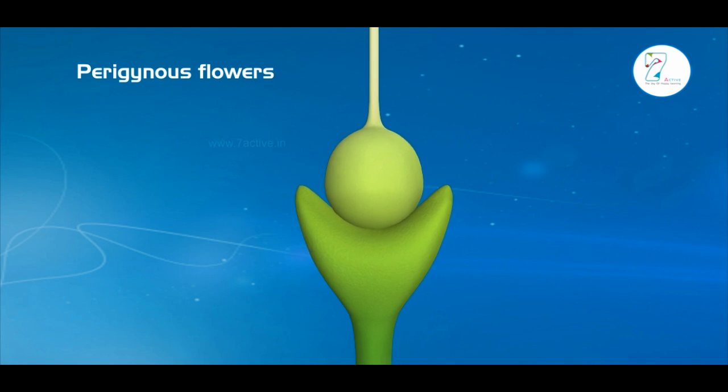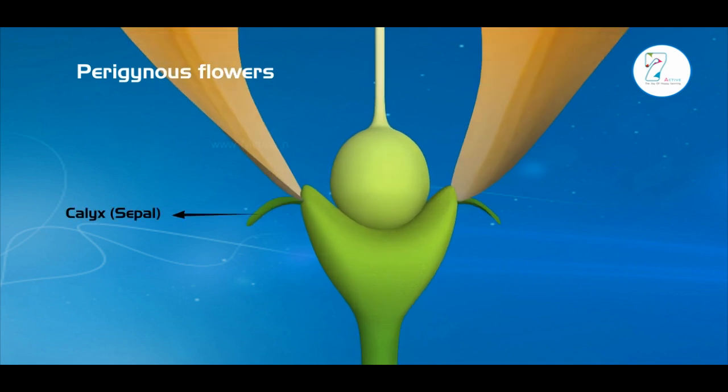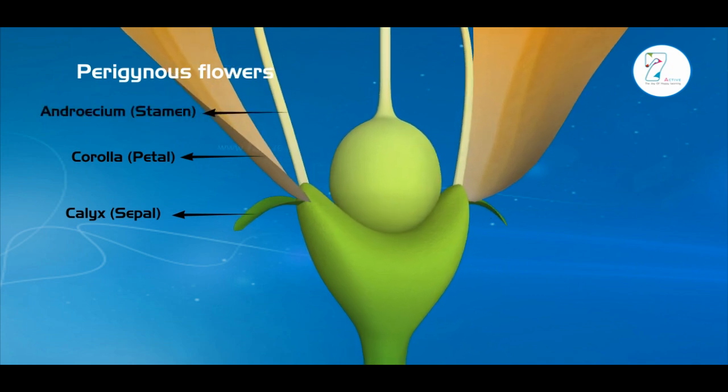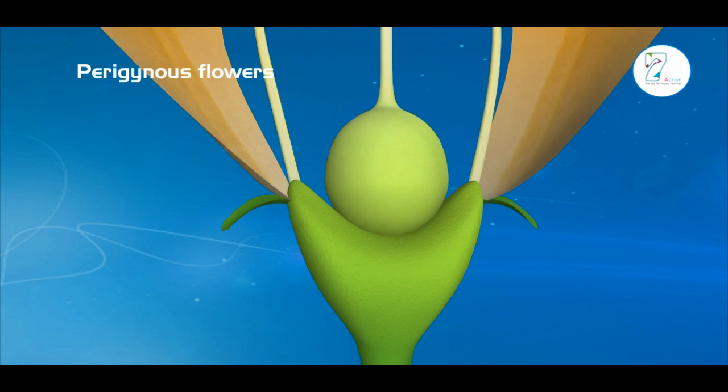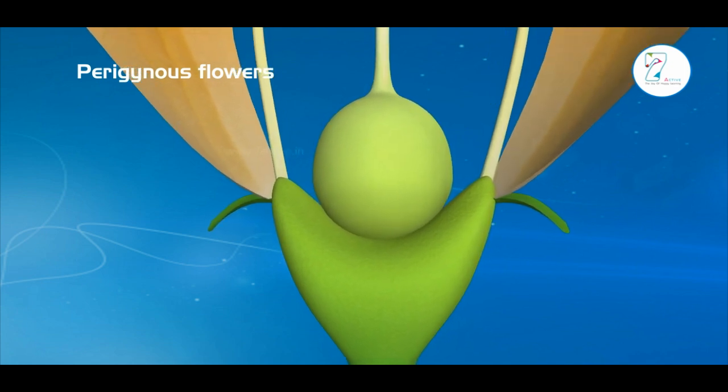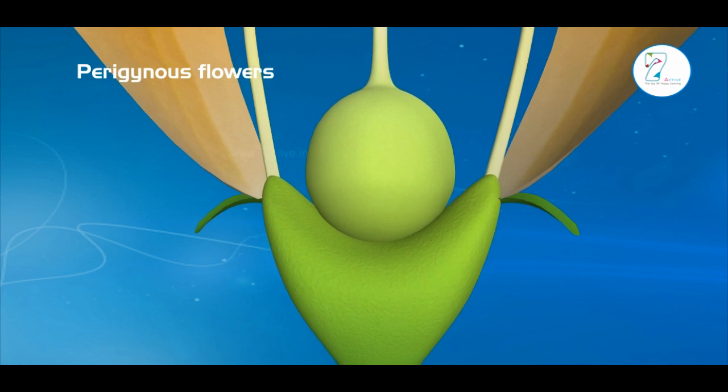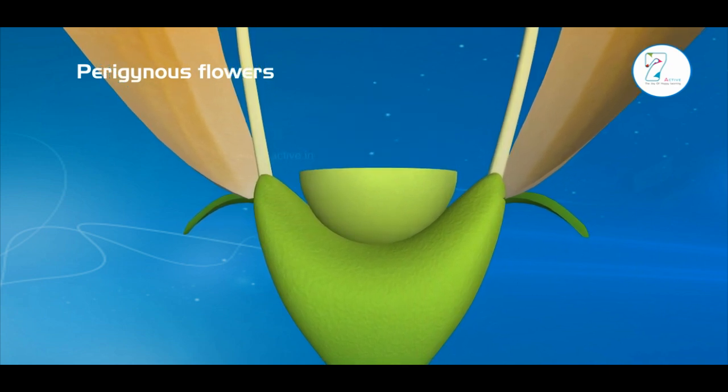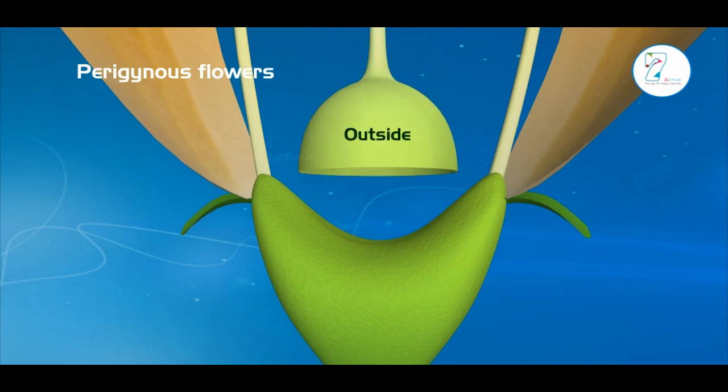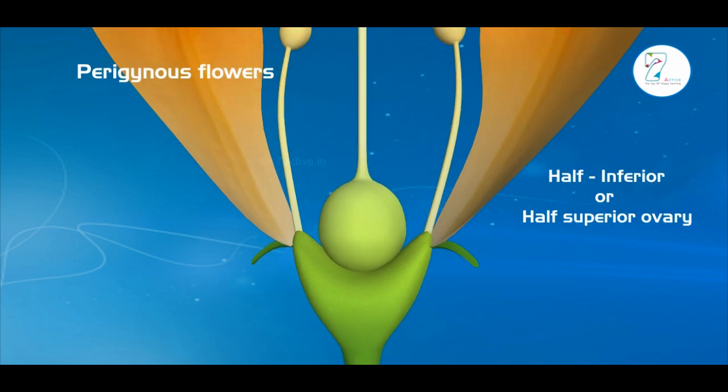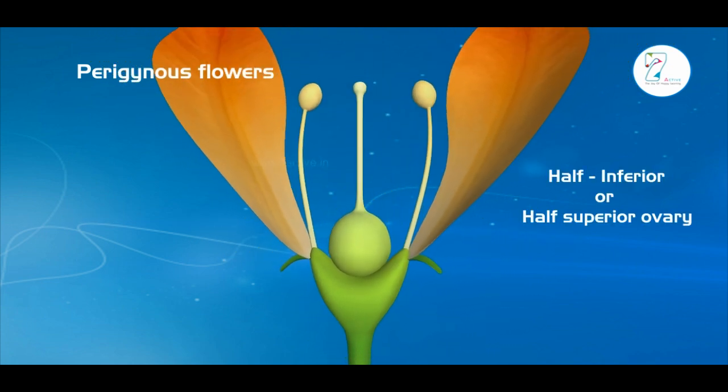The remaining floral parts like calyx, corolla, and androecium are arranged along the margins. In this flower, ovary wall is adnate to thalamus only at the base. Ovary is present partly inside and partly outside the thalamus. So the ovary is called half-inferior or half-superior ovary.